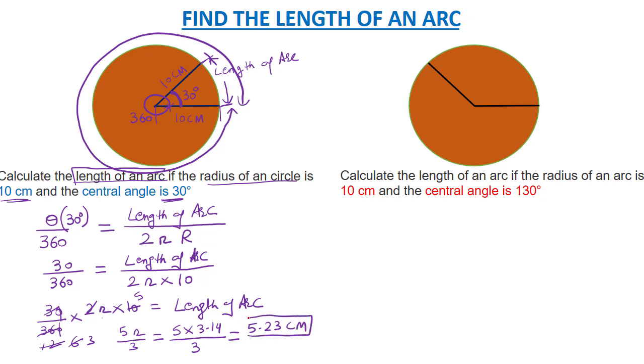So this is the length of the arc for this question. For the next question, we have an obtuse angle of 130°. The radius of the circle is 10 cm.